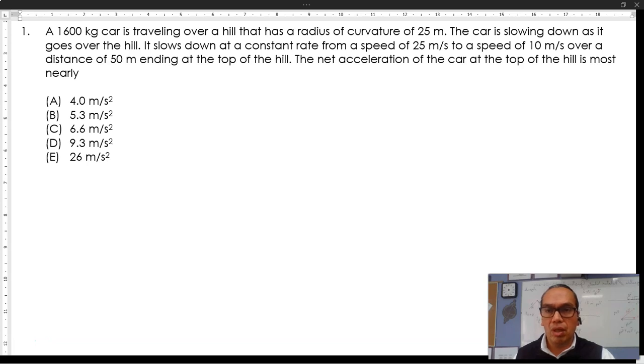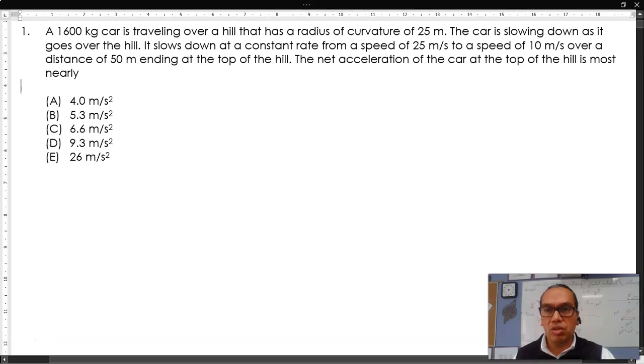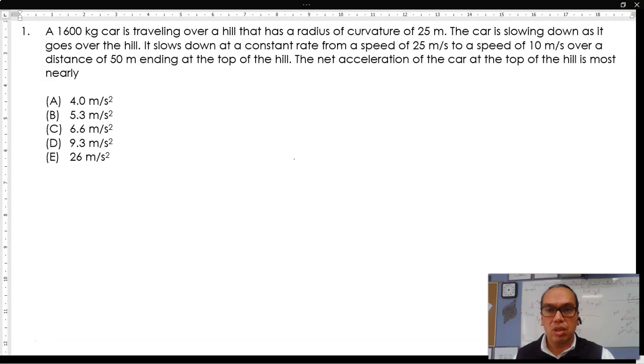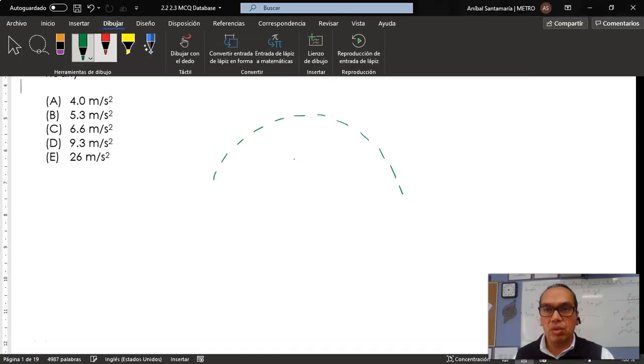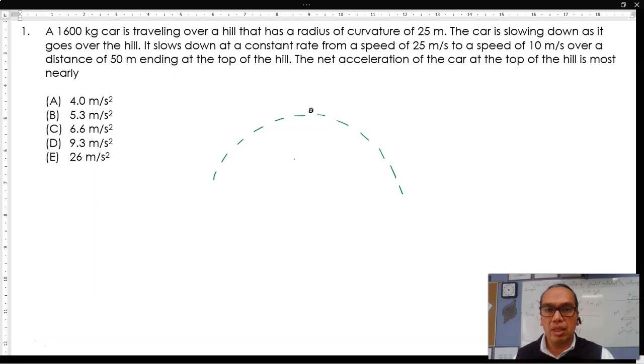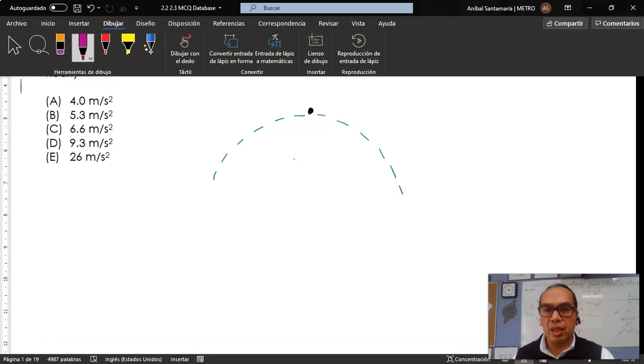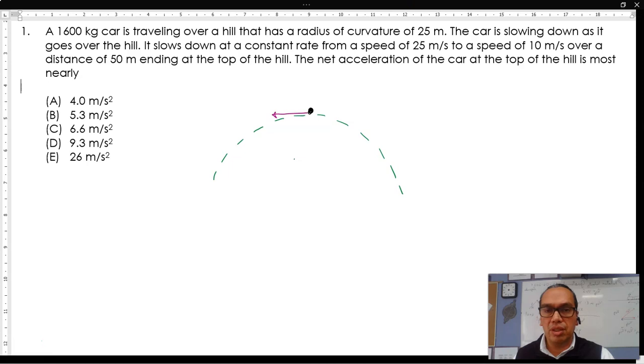We must consider that there are possibly two accelerations to be measured here. The car is traveling along a circular path, and they want you to calculate the acceleration right at the top of its path. But during this time, the object has been decelerating with a tangential acceleration that they claim is constant.